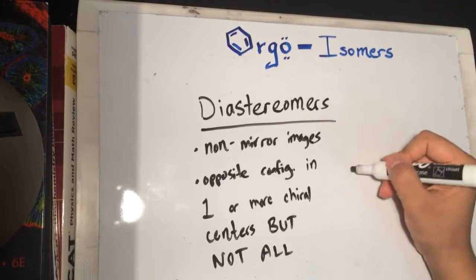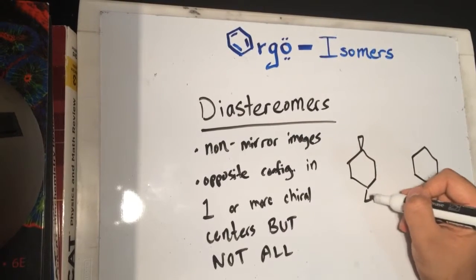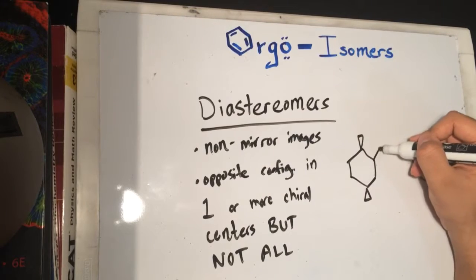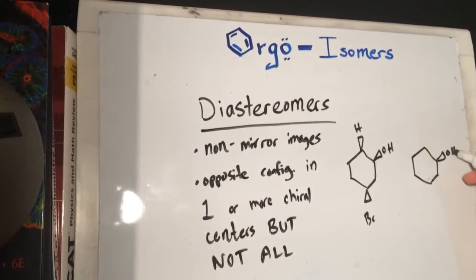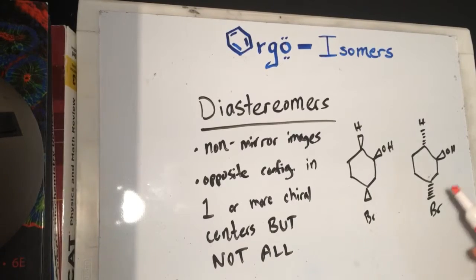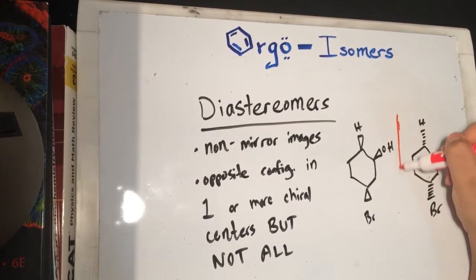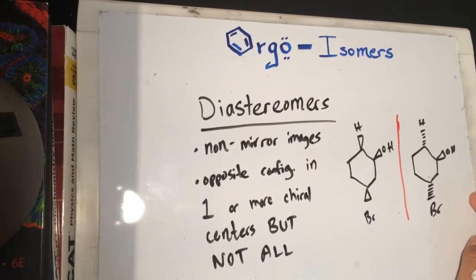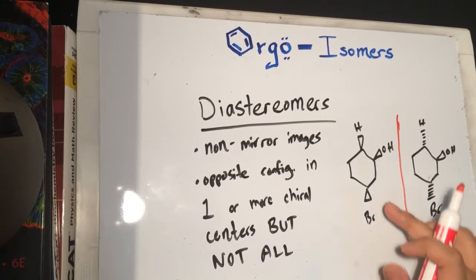That's a bunch of words that makes no sense, so let me show you a picture and hopefully it'll make perfect sense. Here's a wedge right here, a wedge right there, and a hydrogen. These guys are diastereomers — first and foremost, they're not mirror images. If you were to take this and just reflect it, you're not going to get the other molecule. So these are non-mirror images. That's the first thing. Second, they have opposite configuration in one or more chiral centers but not all.